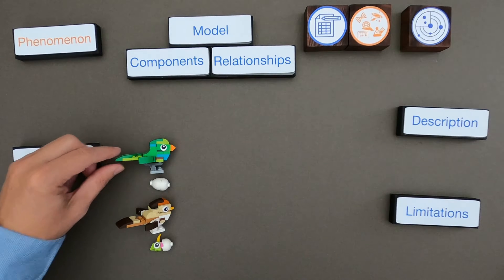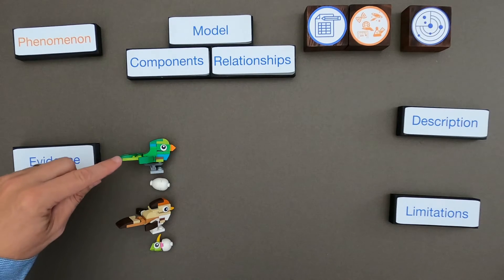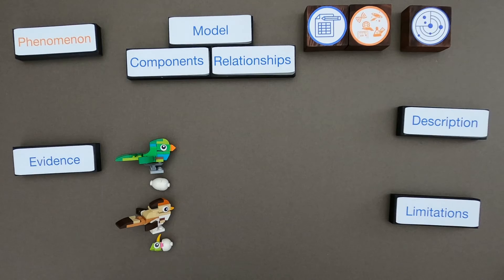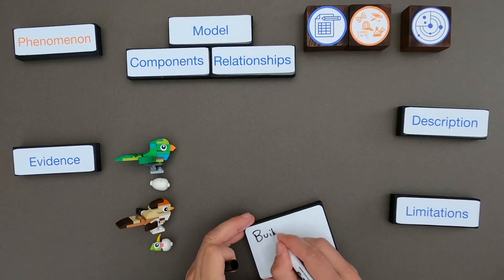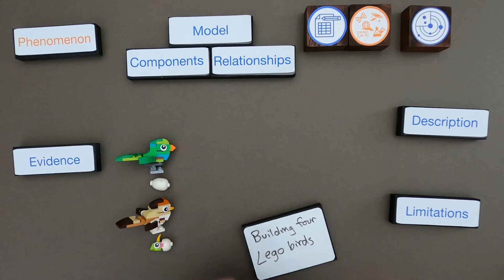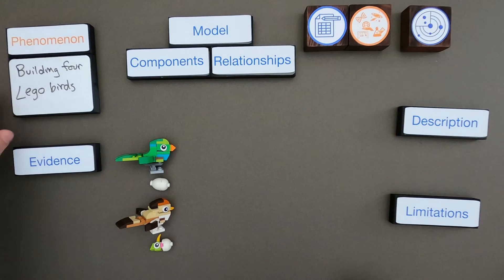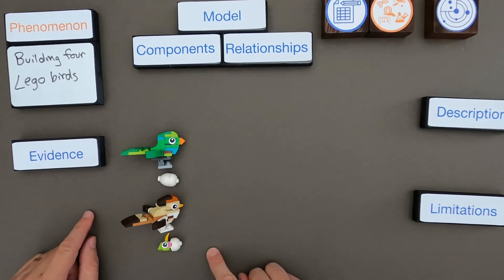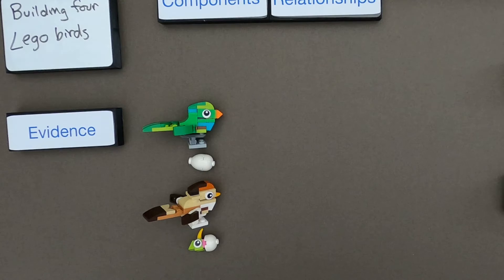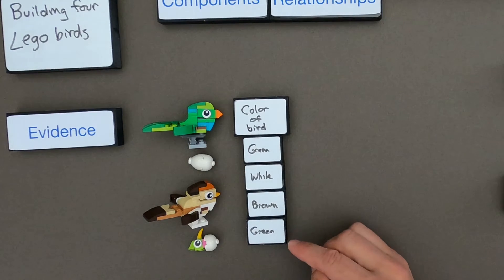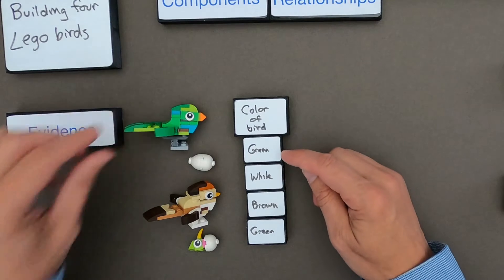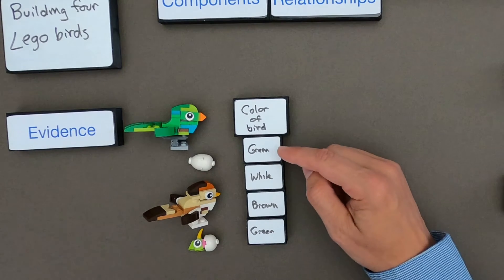I kept track when I was building these LEGO birds — we've got a green one, a white one, a brown one, and a small green one — and I gathered a little bit of evidence. So what I'm going to do is define the phenomena first. The phenomena is the building of these four LEGO birds and then I gathered some data. We're using the phenomena and the evidence to develop the model.